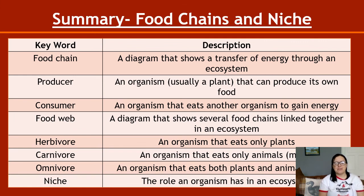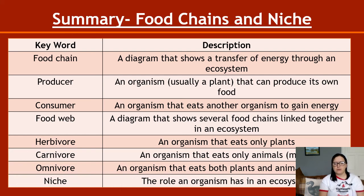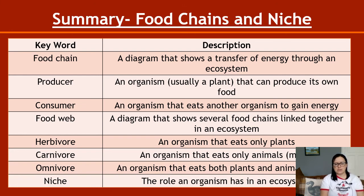To summarize: a food chain is a diagram showing the transfer of energy through an ecosystem. A producer is usually a plant that can produce its own food. A consumer eats another organism to gain energy. A food web links several food chains together. Herbivore eats only plants; carnivore eats only meat; omnivore eats both. A niche is the role an organism has in an ecosystem. Use flashcards for vocabulary, and practice food chain questions — what happens to species X if we take away species Y?